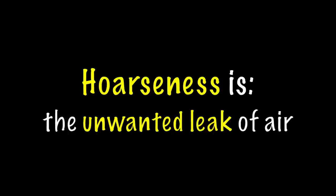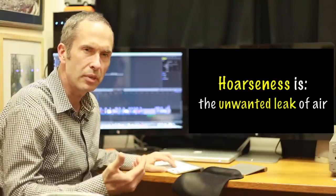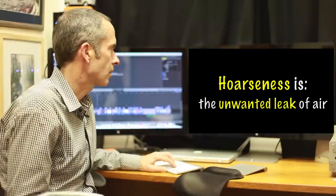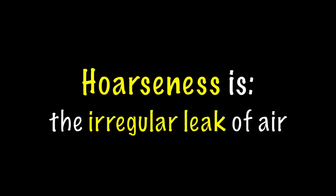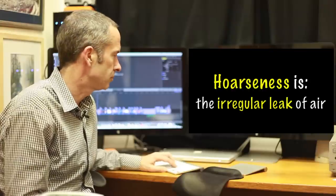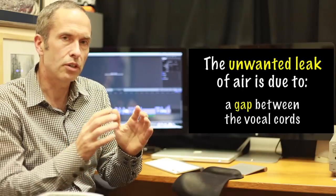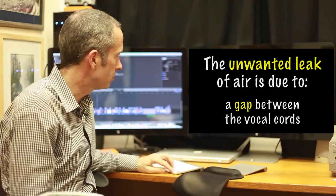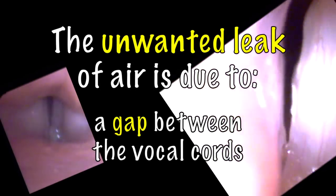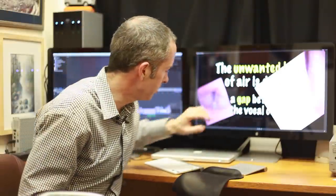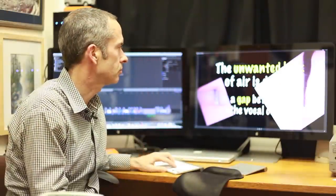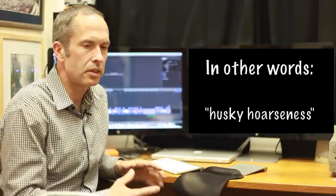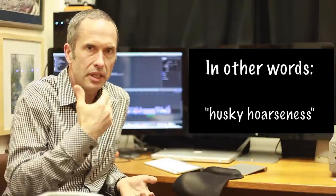The first is the unwanted leak of air. Let's take a listen to the leaking sound. We have a where air is coming out unintentionally, and that's one type of hoarseness. The unwanted leak of air occurs whenever there's a gap or an opening between the vocal cords. The black area in between the vocal cords is where air can leak out. And I would like to call this a husky hoarseness. We hear the air leak.